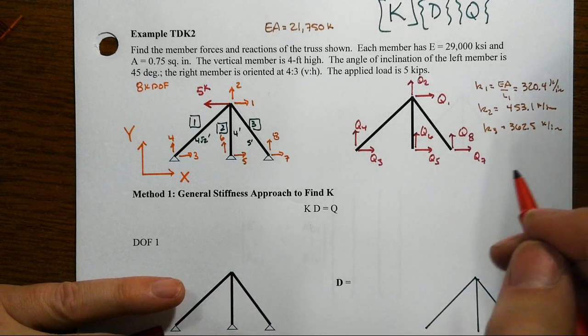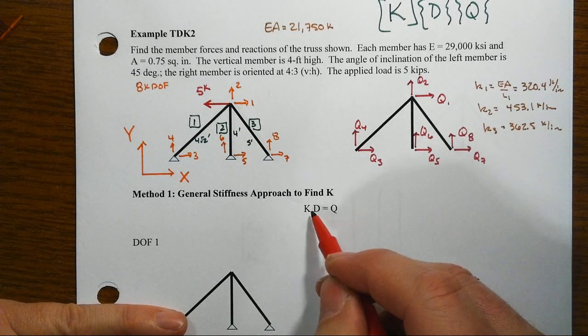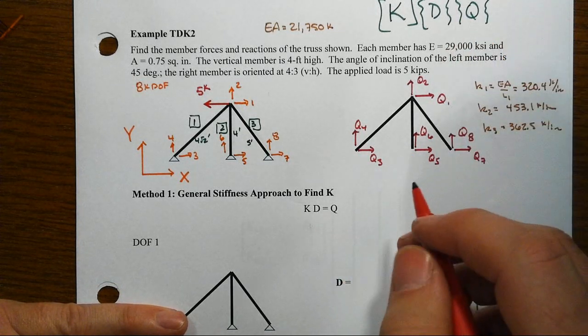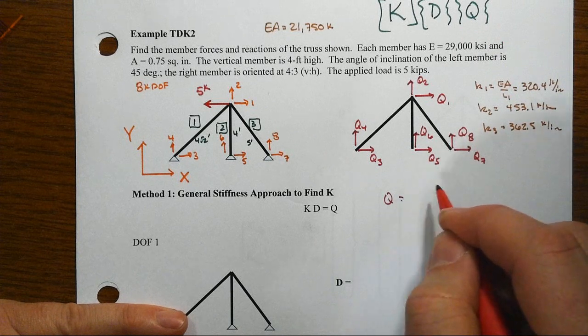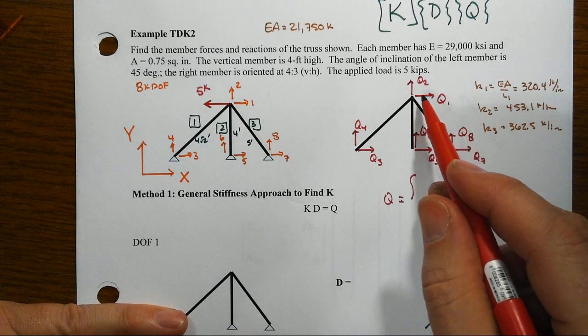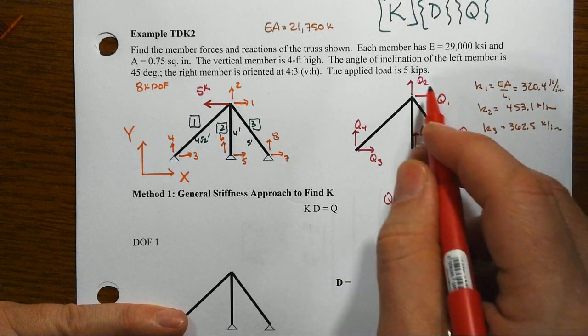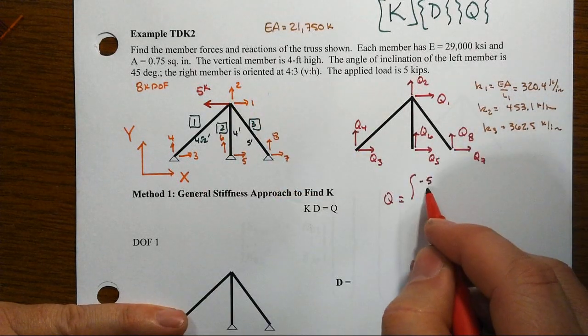So when we would go to look at, say, this force vector here, kd equal q, or we can represent it up here as well, this q vector then, it's going to be 8 by 1, 8 entries. Q1 would be equal to minus 5, q2 has no force applied, so that's 0.